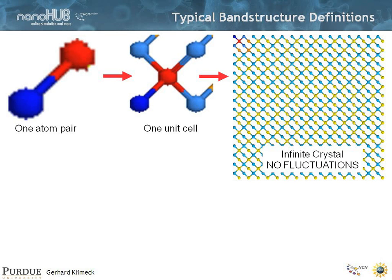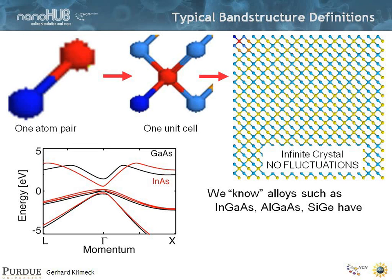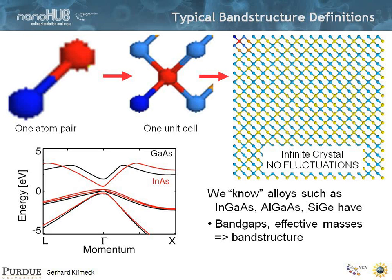That means it's an infinite crystal and there's no fluctuation whatsoever. So we know how to compute gallium arsenide or indium arsenide dispersions for many materials. But we also know that alloys such as indium gallium arsenide, aluminum gallium arsenide, or silicon germanium do have band gaps, effective masses, and band structure — but they're not ordered. They're not infinitely periodic. There's a conceptual problem: it's not quite clear how to properly calculate a disordered system and still have a concept of band structure, which is based on an ordered system.